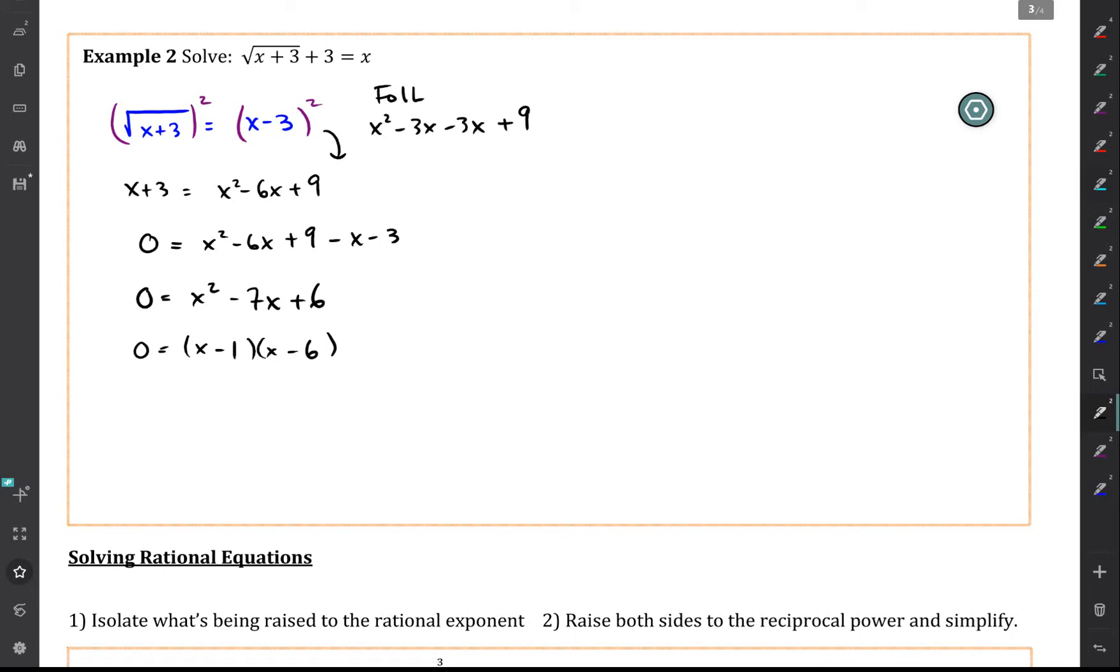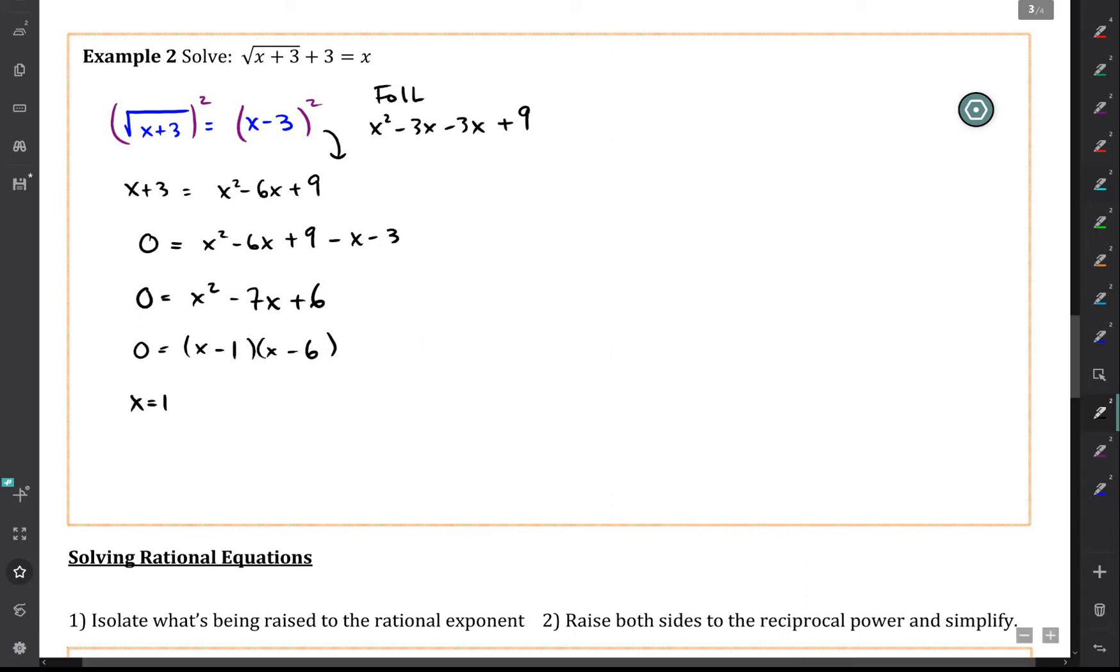Okay, and then now that we have x minus 1 equals 0 times x minus 6 equals 0, either x equals 1 or x equals 6. Those are our possible solutions.